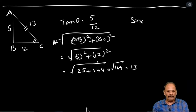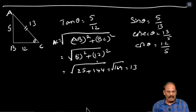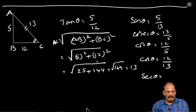Now remaining functions: sin theta — opposite side by hypotenuse, that is 5 by 13. Cosecant theta: reverse to the sin, 13 by 5. Cot theta: reverse to the tan, that is 12 by 5. Cos theta: adjacent side by hypotenuse. Secant theta: reverse to the cos, 13 by 12. One more sum over.